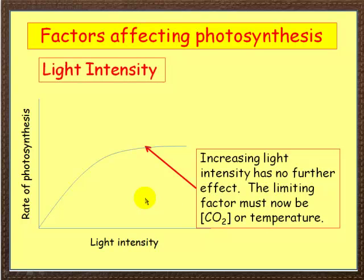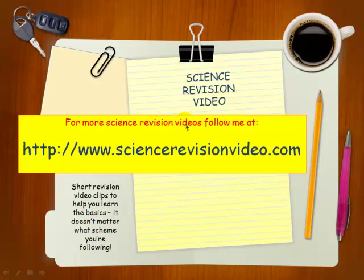So flick back through the three graphs and make sure you understand the profile of each graph and what the limiting factors are at each stage. The three limiting factors are temperature, carbon dioxide concentration, and light intensity. Thank you for watching this video. For more free Science Vision videos, please go to my site at www.ScienceVisionVideo.com.